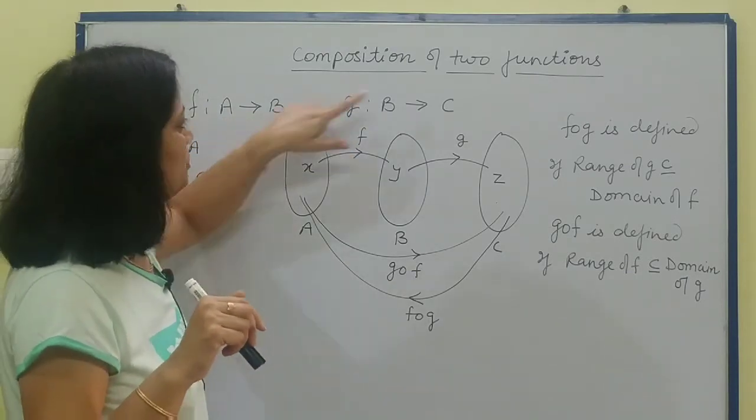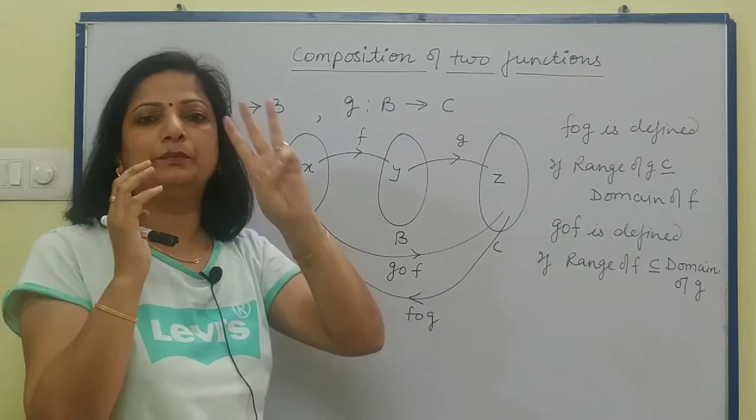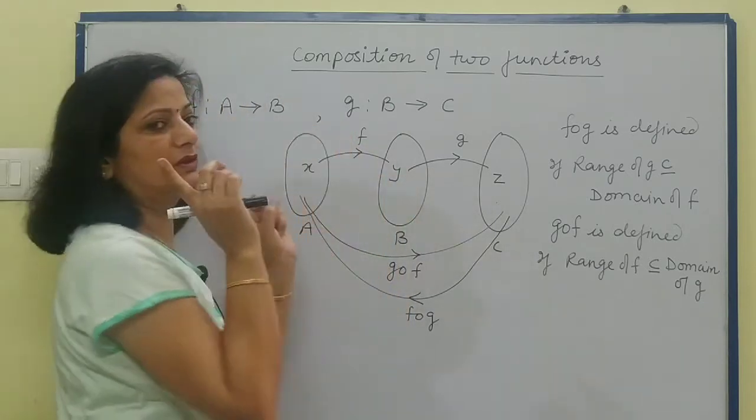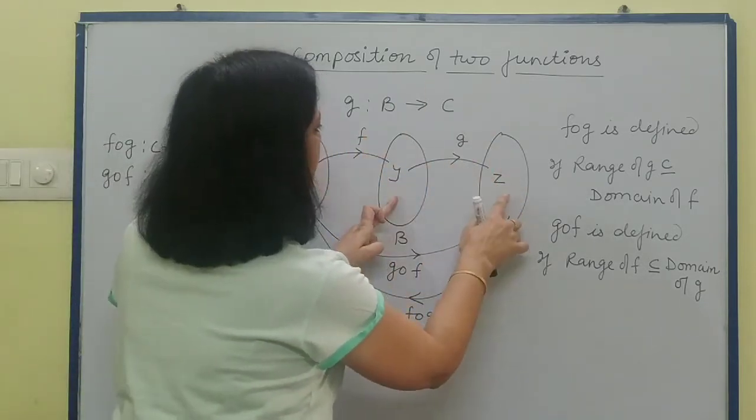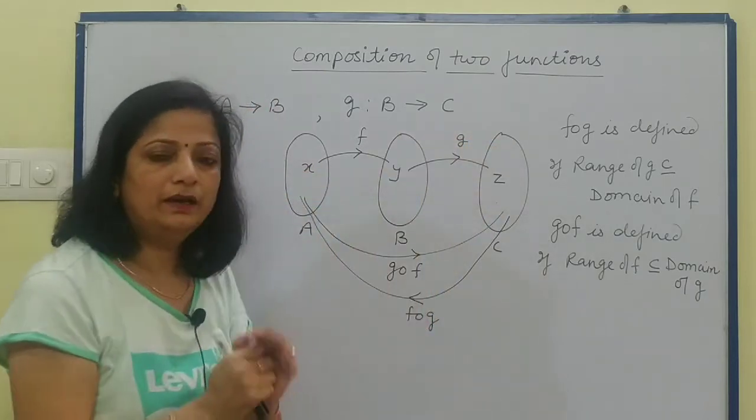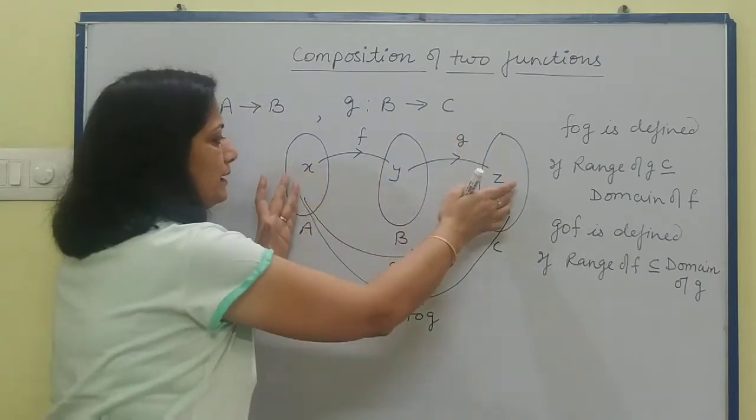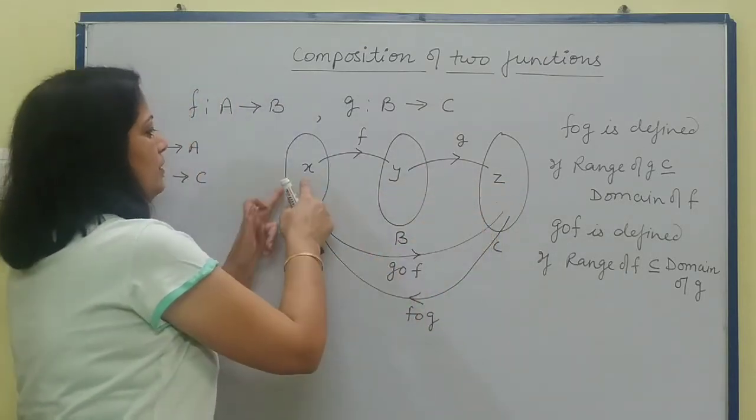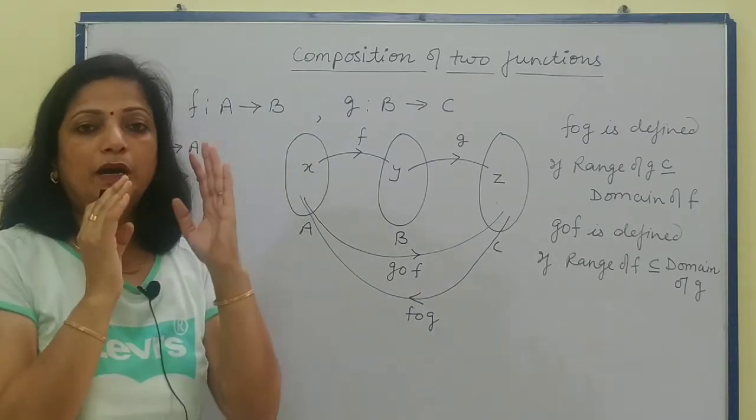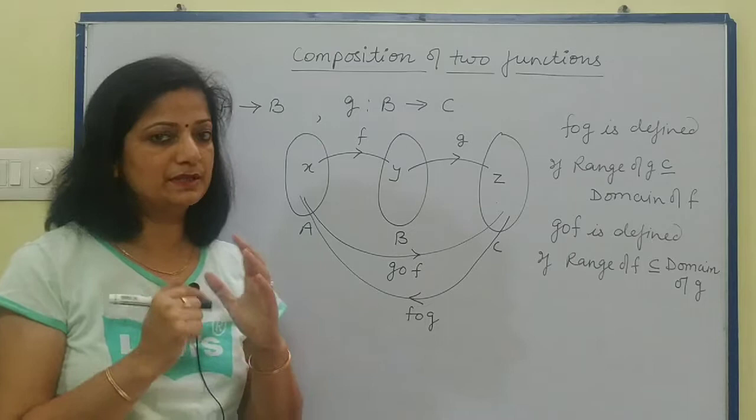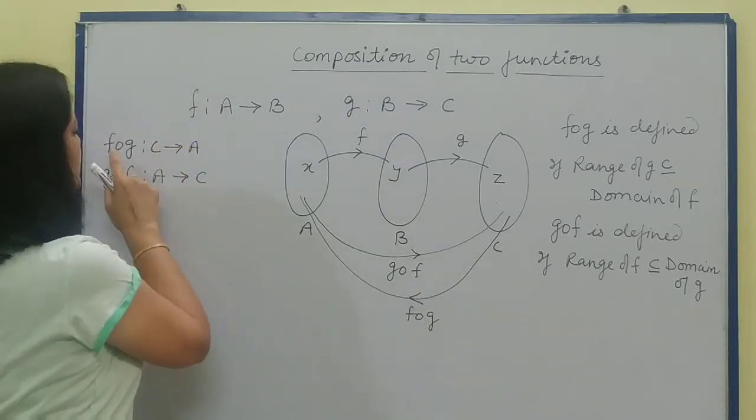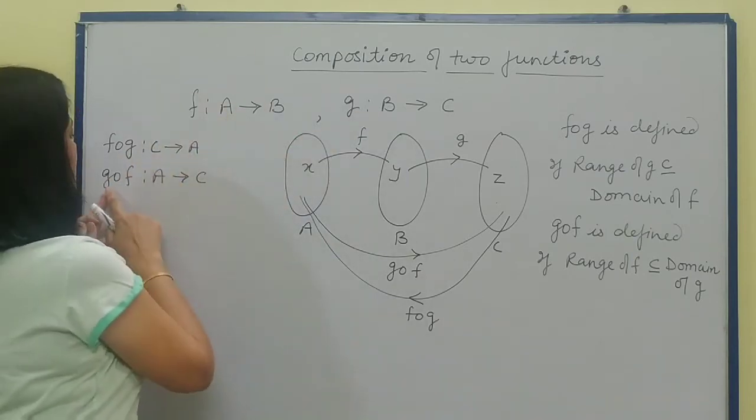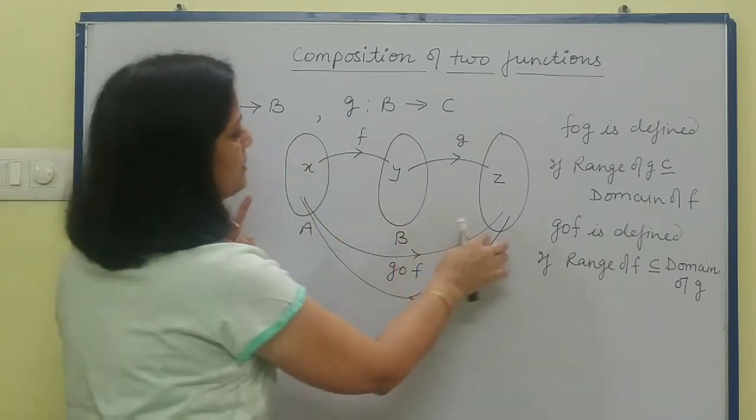If f from A to B is a real function and g from B to C, there are three non-empty sets A, B, and C. Function f relates elements of A to B, and function g relates elements of B to C. If I need to relate elements of the first set directly to the last set, or last set elements to first set elements, then we apply composition of functions. The notation is f composition g from C to A and g composition f from A to C.